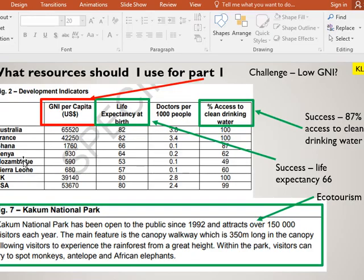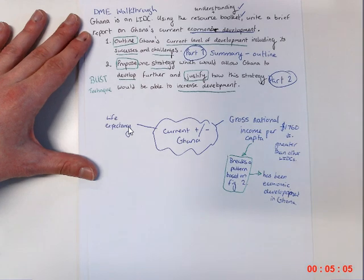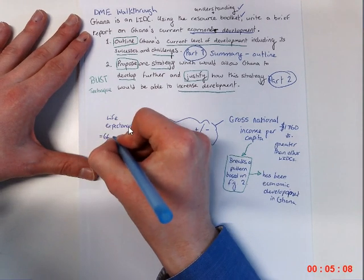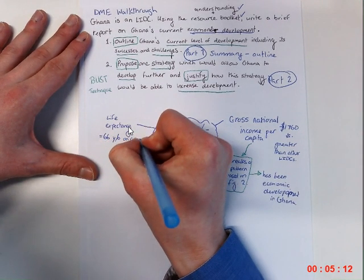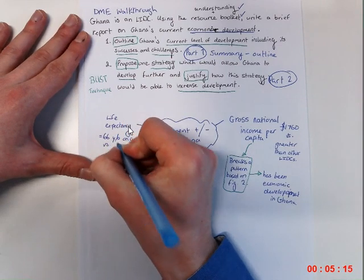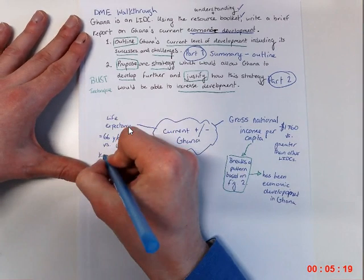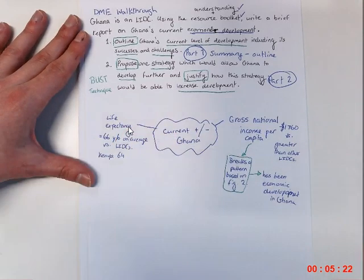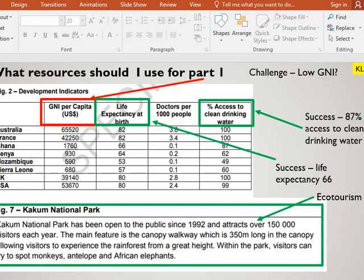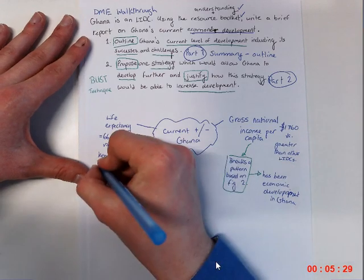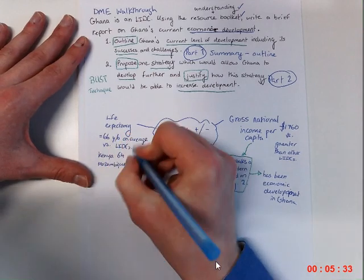I'm going to very briefly come up with a couple of other things that we could refer to. Again, we're always going to try and link it into economic development. Life expectancy is higher than all of the other three, so we can definitely consider this as a success. Life expectancy is higher. Now remember, this is a social indicator. So life expectancy specifically is 66 years old on average for Ghana. And if we look at the other LIDCs, we can see that Kenya has 64, Mozambique 53, Sierra Leone 57.